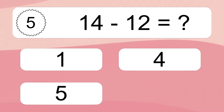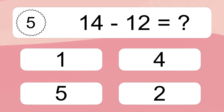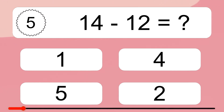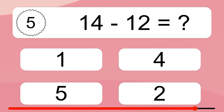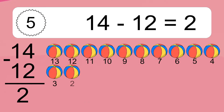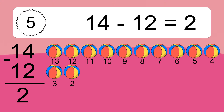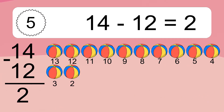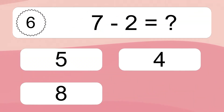14 minus 12 equals what? 14 minus 12 equals 2. Let's count it: 13, 12, 11, 10, 9, 8, 7, 6, 5, 4, 3, 2.